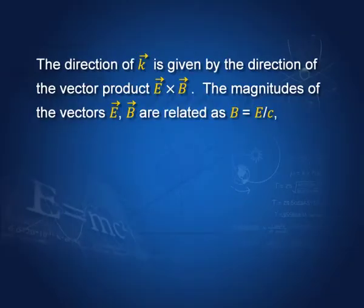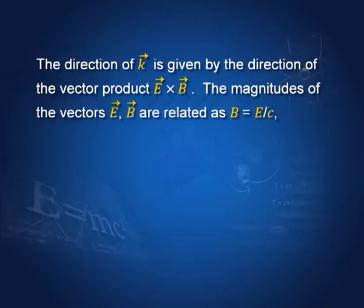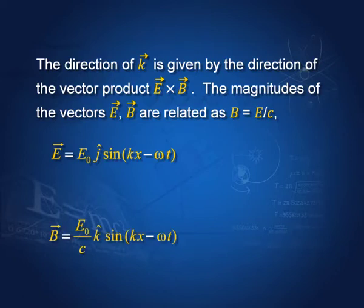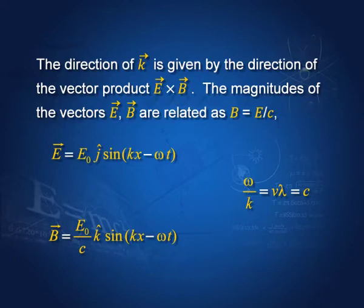The direction of propagation, that is vector K, is given by the direction of the vector product E cross B. The magnitudes of the vectors E and B are related — they are not independent of each other. In fact, the magnitude of B equals E divided by C. So we can write the electric field vector as E₀ ĵ sin(kx − ωt), and the B vector amplitude would be E₀/C in the k̂ direction: E₀/C k̂ sin(kx − ωt). The relation ω/k equals νλ, which equals C, the velocity of the electromagnetic waves.